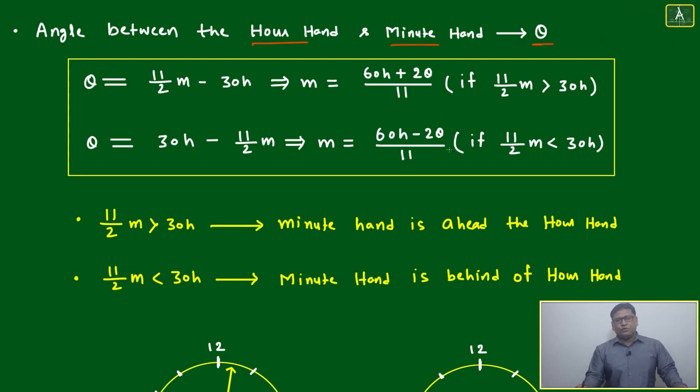Angle between the hour hand and minute hand at any point in time: we already know there will be zero degrees 11 times, 180 degrees 11 times, or any degree between 0 and 180, which occurs 22 times. Suppose at any point the angle between these two is theta. Theta will always have two values: one when the minute hand is behind the hour hand, and another when the minute hand is ahead of the hour hand.